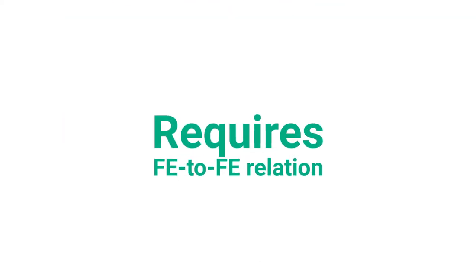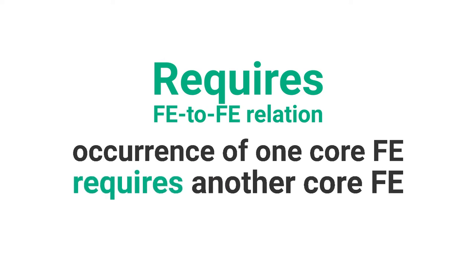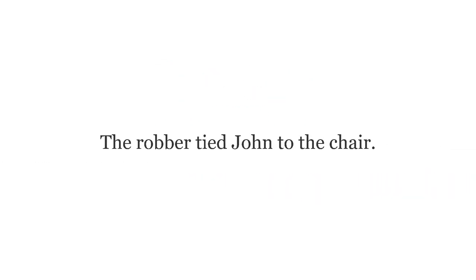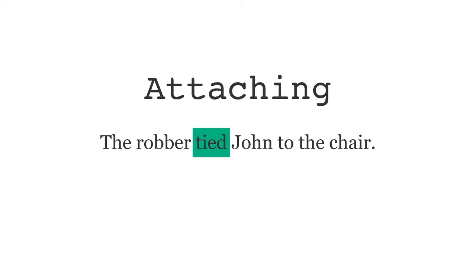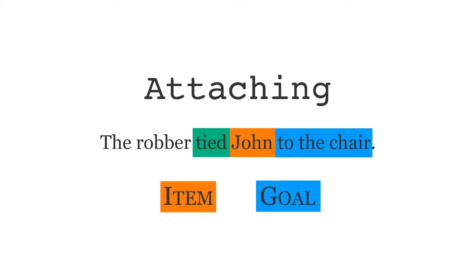In the requires relation, the occurrence of one core frame element requires that another core frame element occurs as well. Take a look at this example: the robber tied John to the chair. Tied is an LU evoking the attaching frame. Among the frame elements in this frame, we have item and goal. They are related in such a way that if item occurs, the goal is required as well.